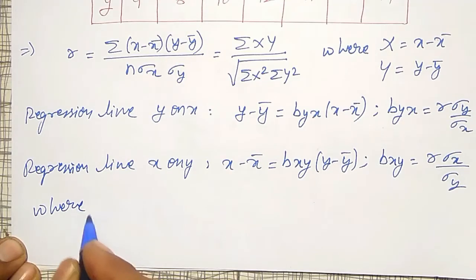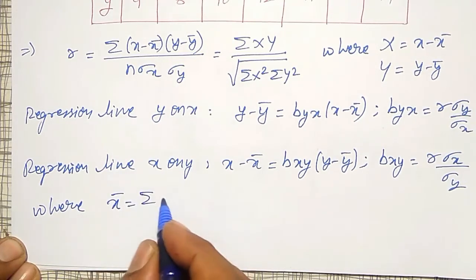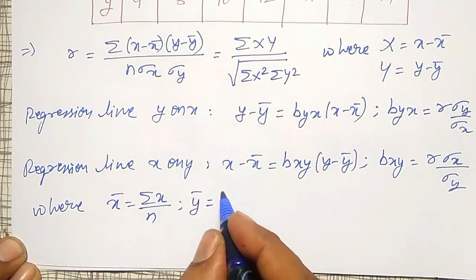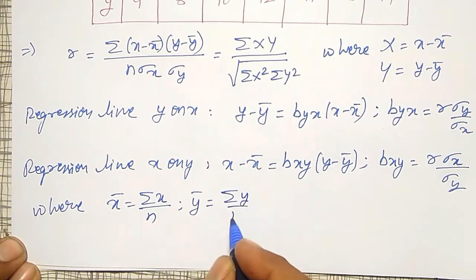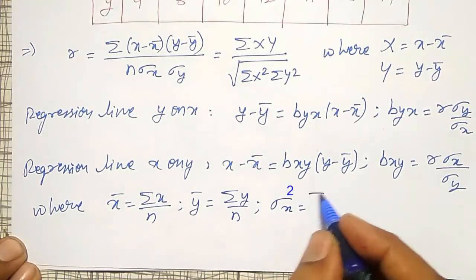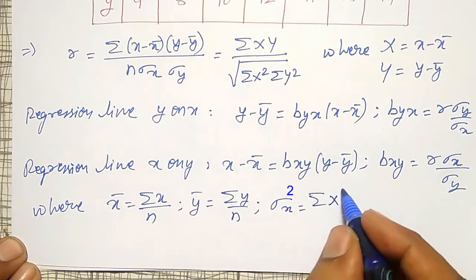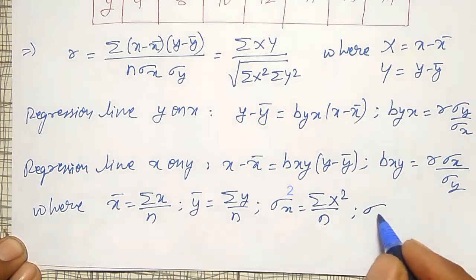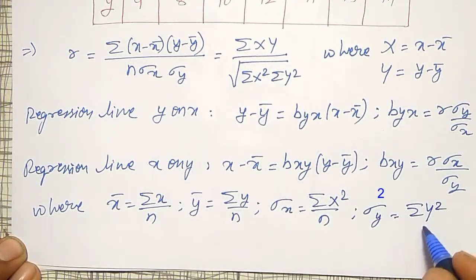Where x̄ equals summation of small x divided by n, and ȳ equals summation of small y divided by n. Sigma x equals the square root of summation of capital X squared divided by n, and sigma y equals the square root of summation of capital Y squared divided by n. According to these formulas, I will prepare the table and come back with the required columns filled in.